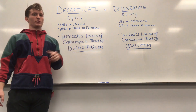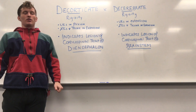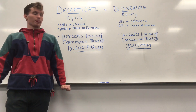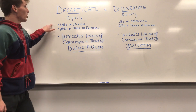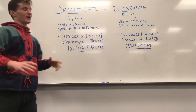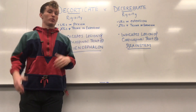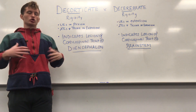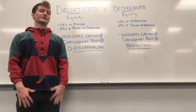It's only a process of elimination with decerebrate — the upper extremities must be in extension. Now we know what the upper extremities are doing in both patterns. Looking at the lower extremities with both, easy to remember: trunk and lower extremities are in extension.